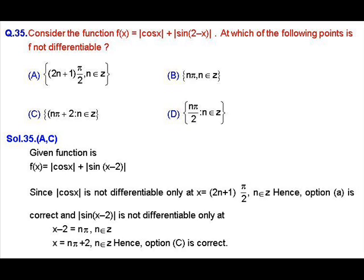Mod of cos x will not be differentiable where cos x equals 0, that is x equal to (2n+1)π/2. At these points, mod of cos x is not differentiable, but mod of sin(2 minus x) will be differentiable. So at these points, our function f is not going to be differentiable, which is why option A is correct.